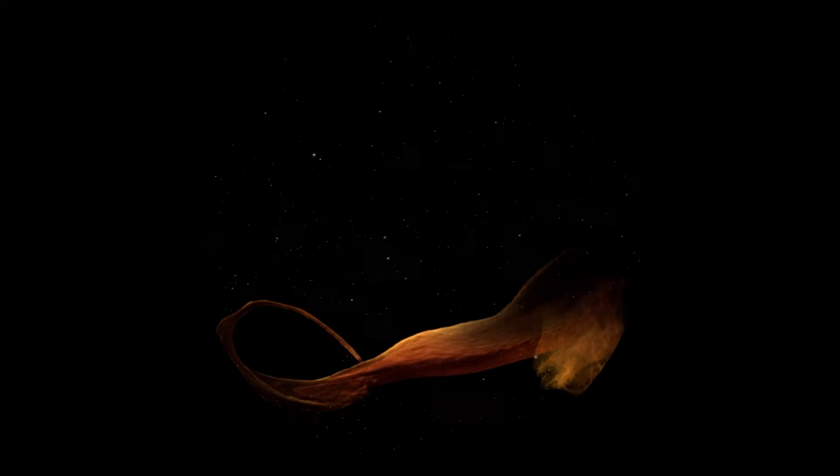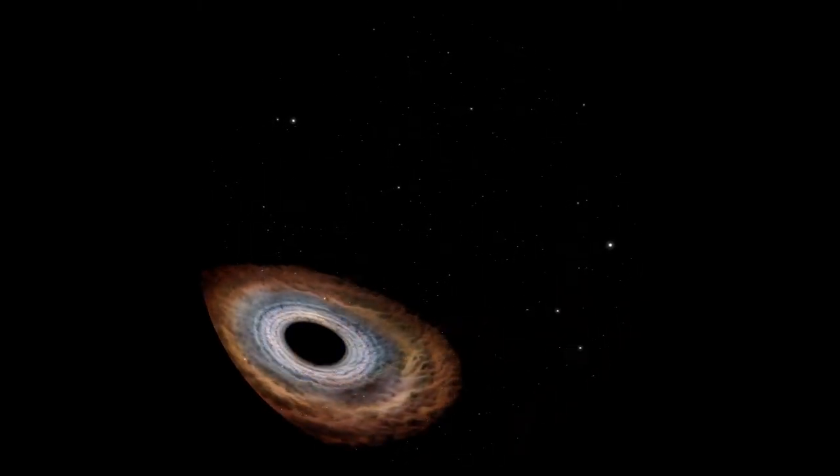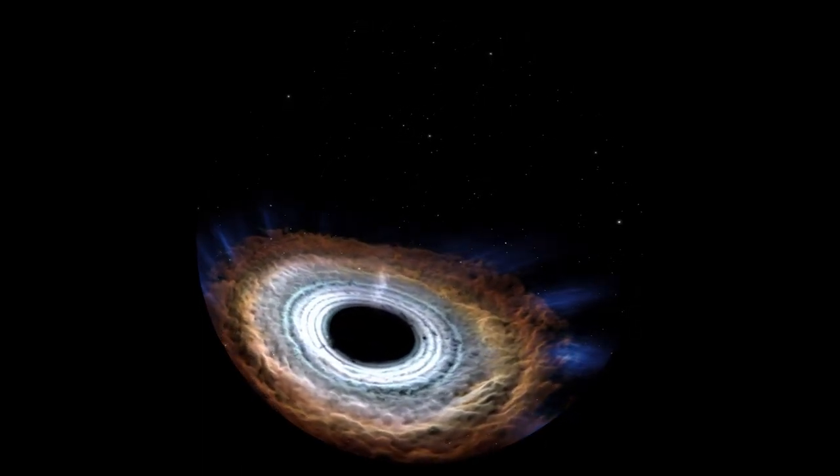So, a black hole is truly a trapped surface, as Penrose precisely described it. We can, however, see matter accreting outside the event horizon and detect black holes indirectly.